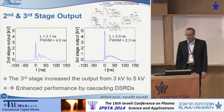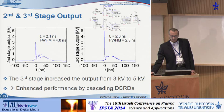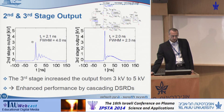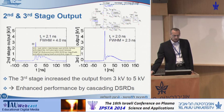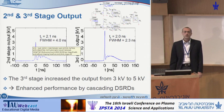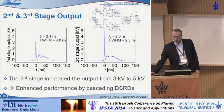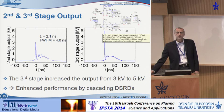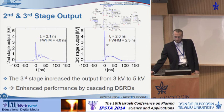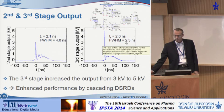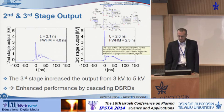Looking at the second and third compression stages: with a 50-ohm load after the second stage, we obtained 3 kilovolts with a full width half maximum of 4 nanoseconds and a rise time of 2.1 nanoseconds. With the load after the third DSRD, we obtained further compression to 5 kilovolts with full width half maximum narrowed to 2.3 nanoseconds. This confirms that enhanced performance by cascading DSRDs was obtained, answering the research question.